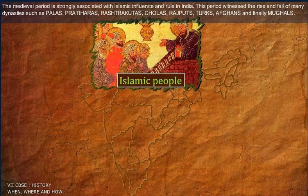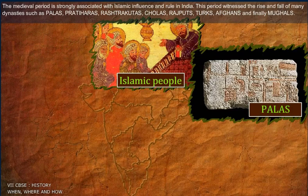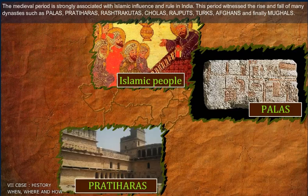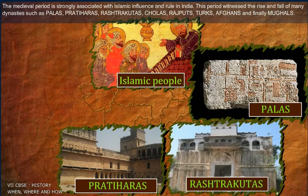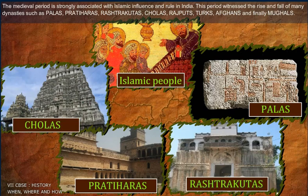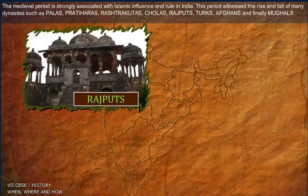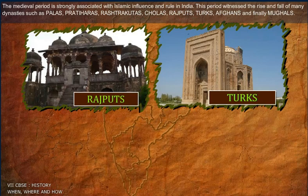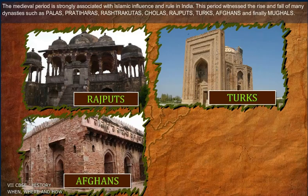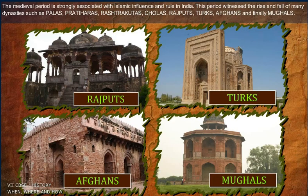This period witnessed the rise and fall of many dynasties such as Palas, Pratiharas, Rashtrakutas, Cholas, Rajputs, Turks, Afghans and finally Mughals.